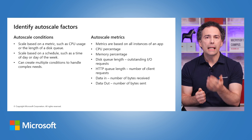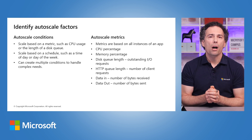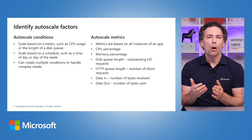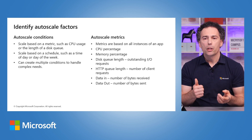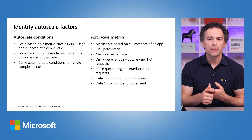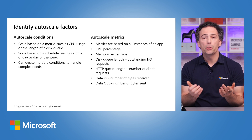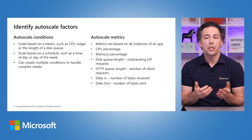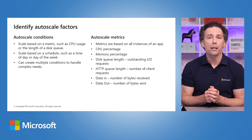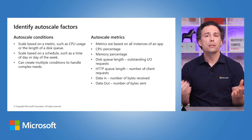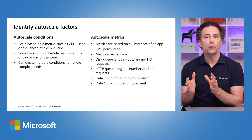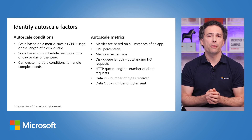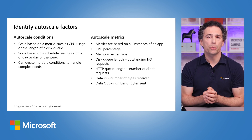Here's a list of what AutoScale can act upon: memory percentage, disk queue length, HTTP queue length, or some others that are specific to an App Service Plan's resources.